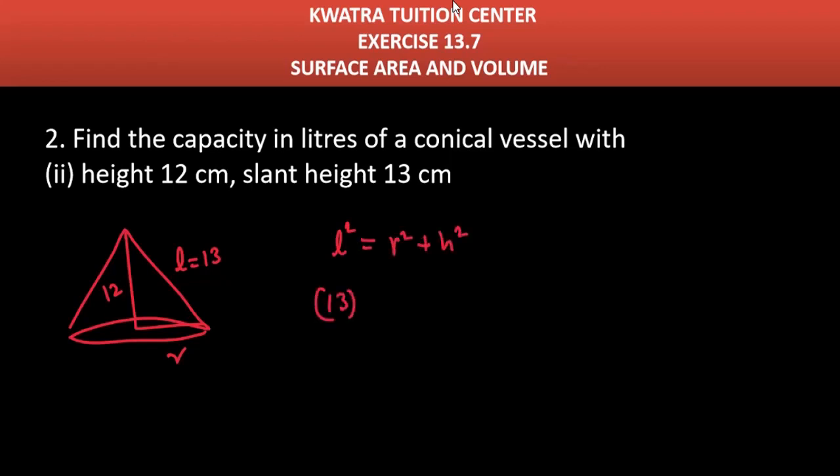L² is equal to R² plus H². L², what is our 13 square? R², unknown is, H² is 12 square. 13 square is 169, 12 square is 144. So, this will give you 25. R ki value kitni aa jayegi aap ki? 5 cm. Theek hai?